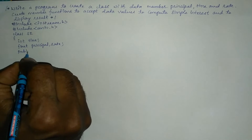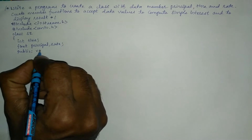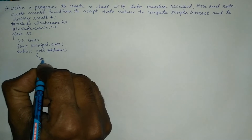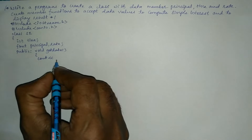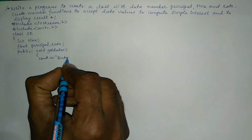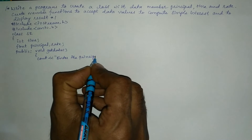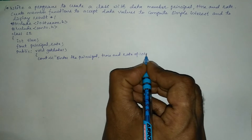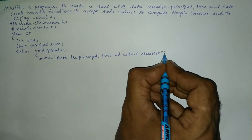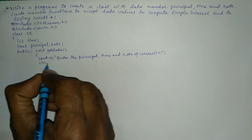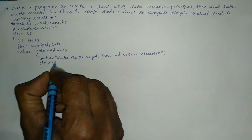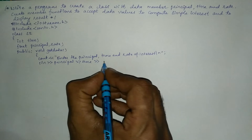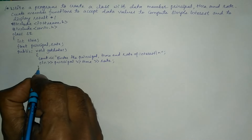Now in the public section I am going to write void get_data. get_data is a user-defined function with a curly open brace. Here I am going to ask the user to enter the three values. So I will write: enter the principal, time, and rate of interest followed by a newline. We will receive input using the cin statement for principal, then time using the stream extraction operator, and then rate. Put semicolon, curly closing brace.